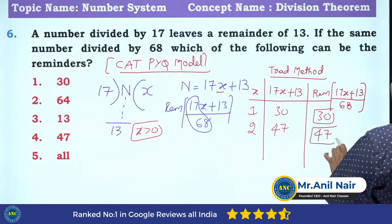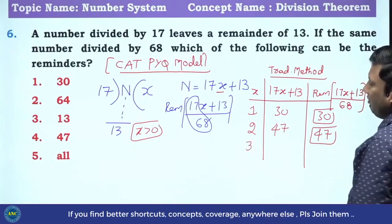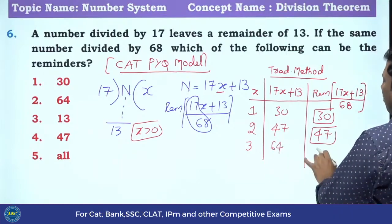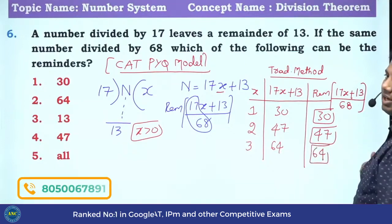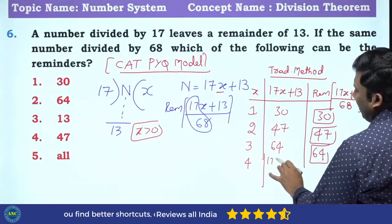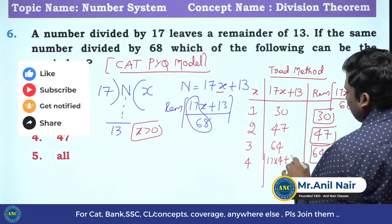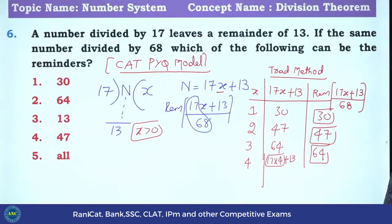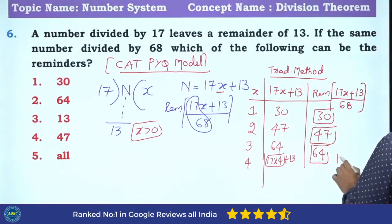If X is 2: 17×2 is 34, plus 13 is 47. 47 divided by 68 — remainder is 47. If X is 3: 17×3 is 51, plus 13 is 64. 64 divided by 68 — remainder is 64. If X is 4: 17×4 is 68, plus 13 is 81. 81 divided by 68 — remainder is 13.